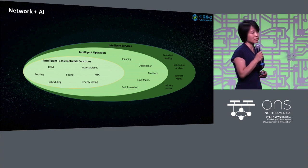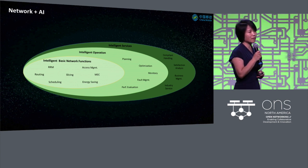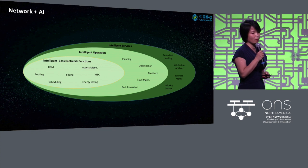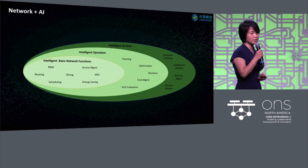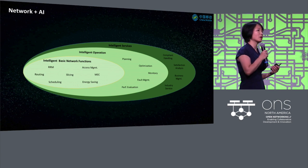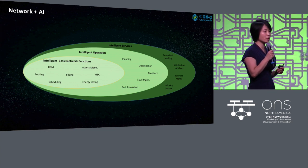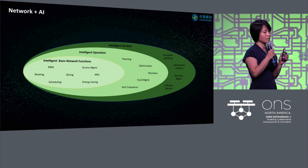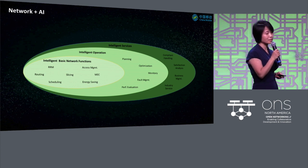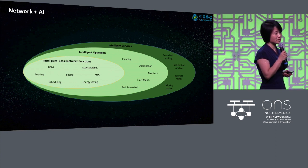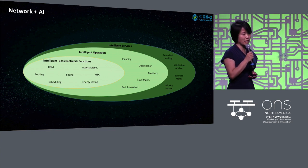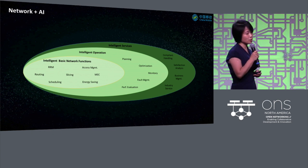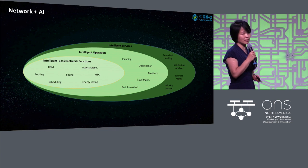We think the service layer is easier to do compared to the inner ones. The middle layer is intelligent operation, where we put in quite a lot of effort. The core layer is making the foundation of the network intelligent — routing, slicing, energy saving — how we use AI to make the network intelligent.